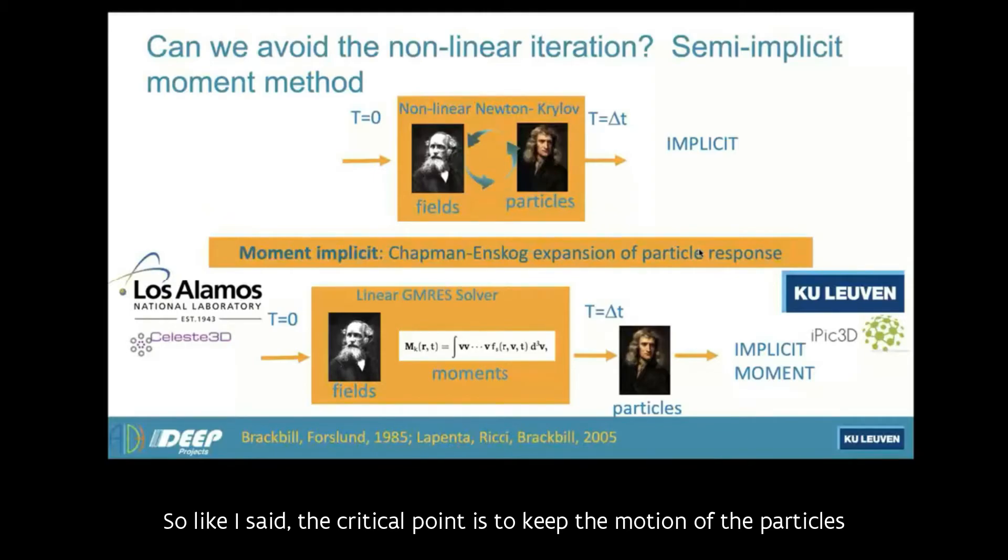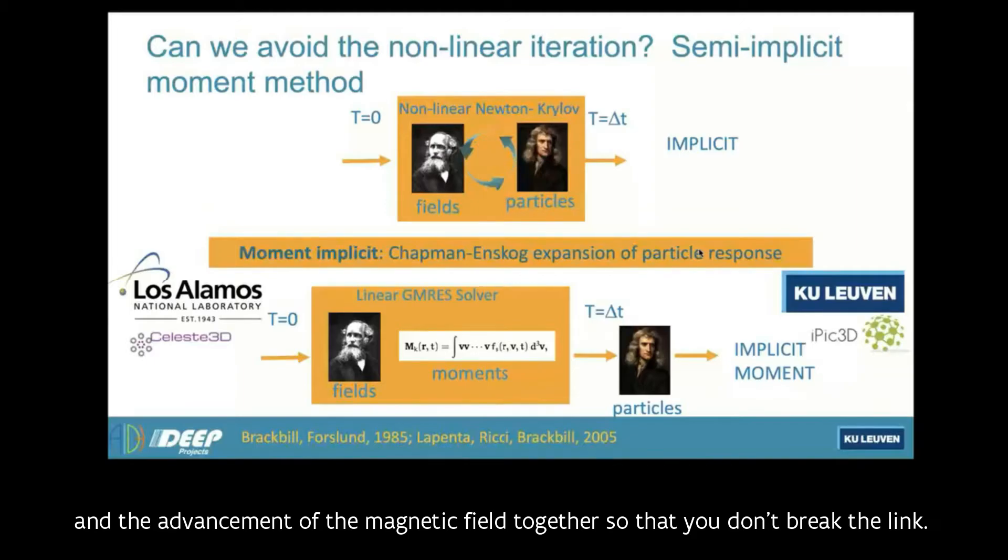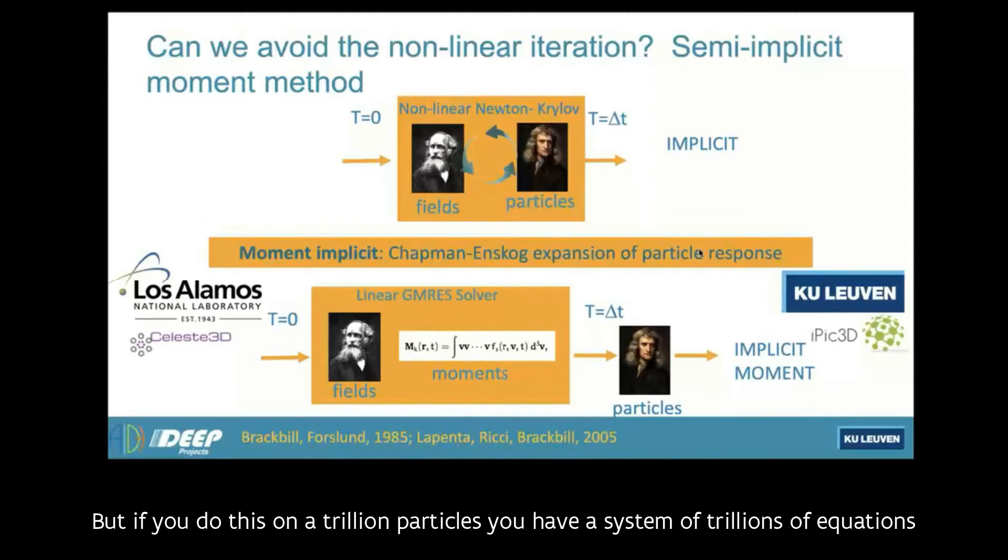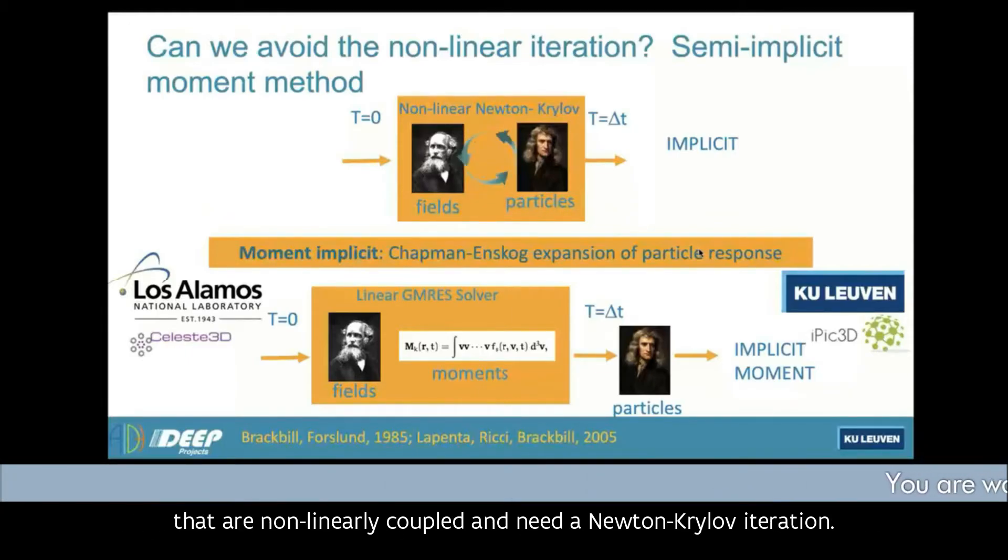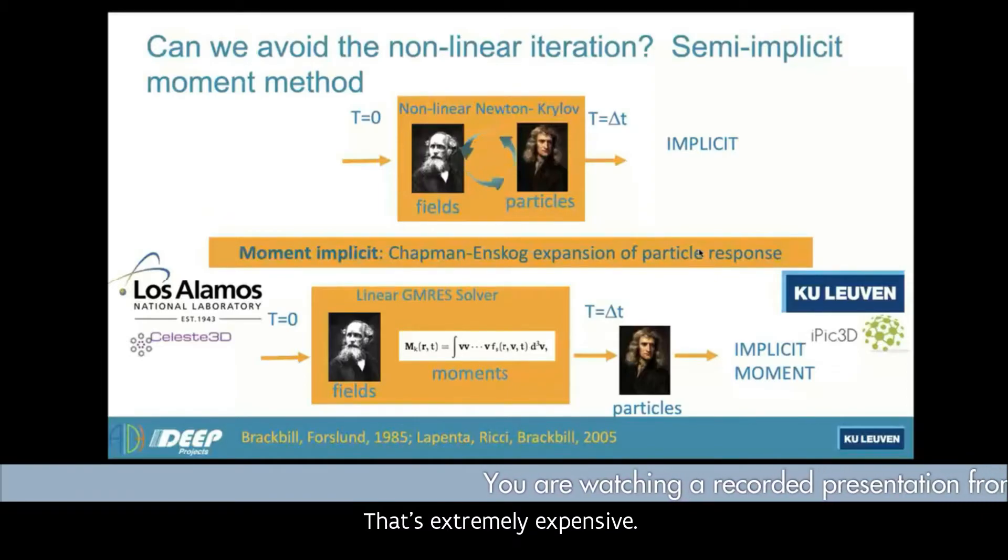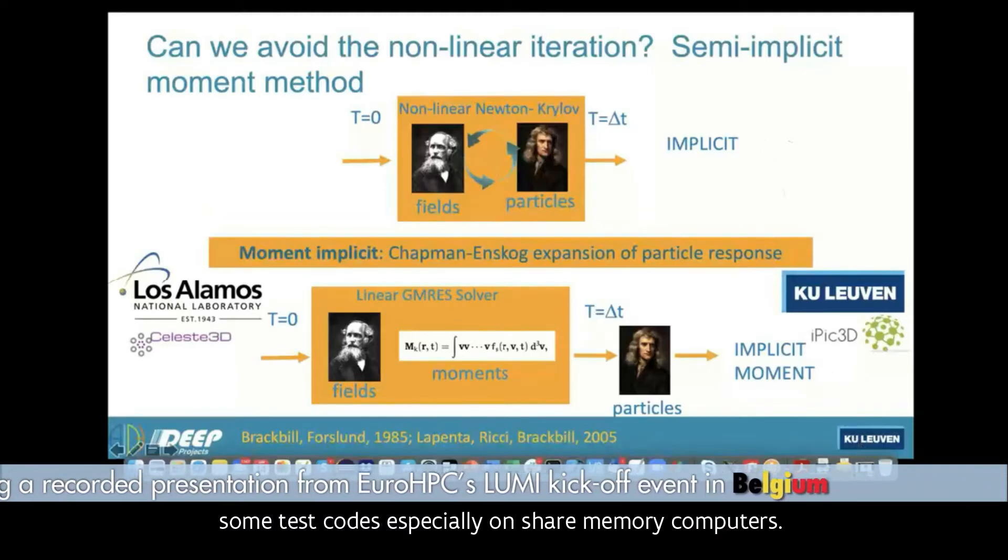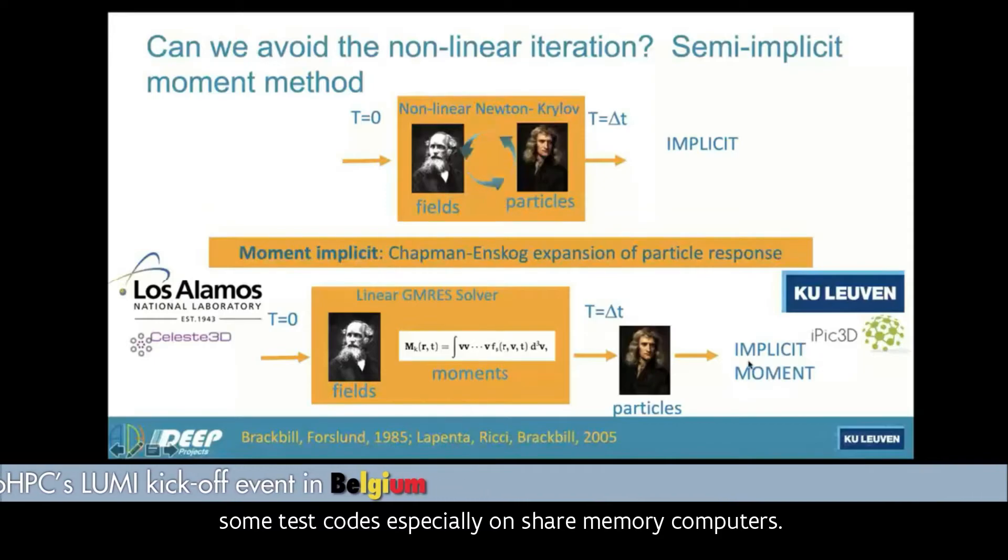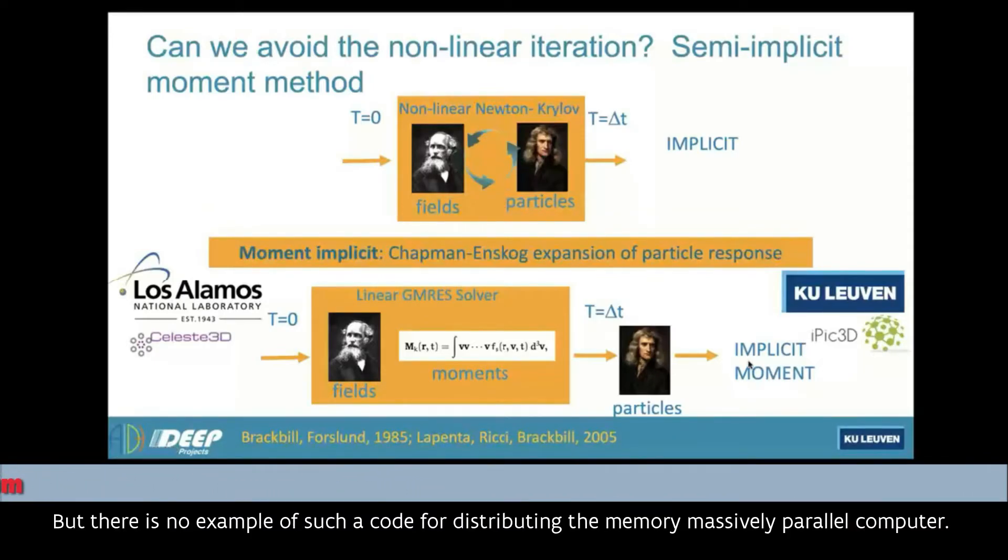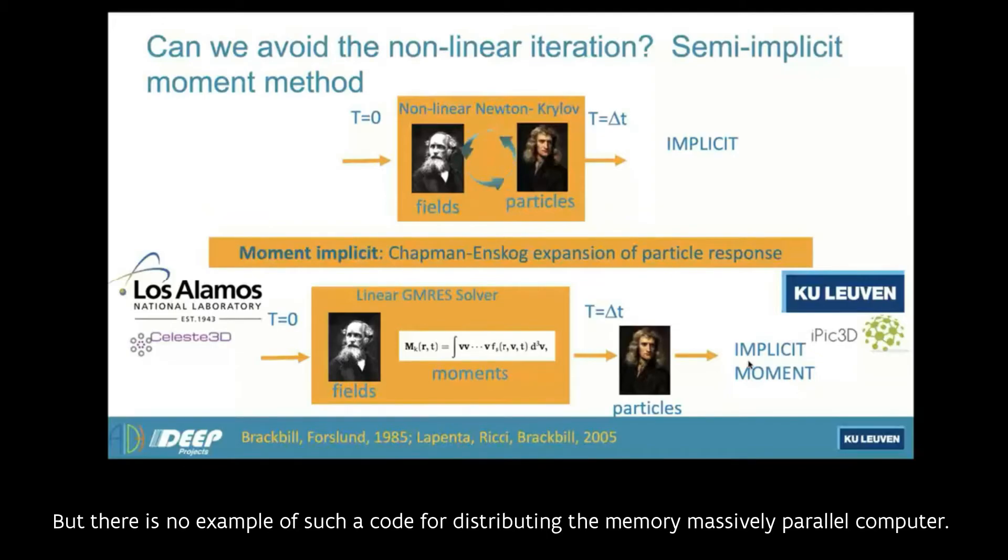So now I'm going to describe what this approach is that makes possible to do much larger simulations in these modern supercomputers. Like I said, the critical point is to keep the motion of the particles and the advancement of the magnetic fields together so that you don't break the link. You can do this directly with Newton iteration. But if you do this on a trillion particles, you have a system of trillions of equations that are non-linearly coupled and need a Newton iteration. That's extremely expensive.